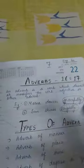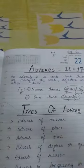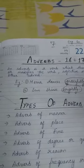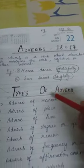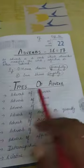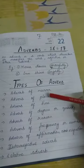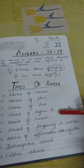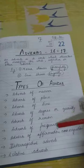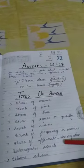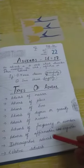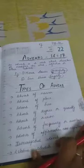Now, before learning about the position of adverbs, let's learn about the types of adverbs. We will deal with nine types: adverb of manner, adverb of place, adverb of time, adverb of degree or quantity, adverb of reason, adverb of frequency or number, adverb of affirmation and negation, interrogative adverb, and relative adverb. Let's learn these in detail.